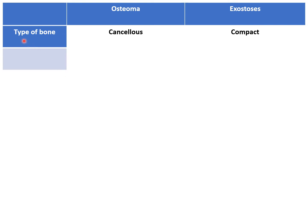First is the type of bone involved. Osteoma develops in the cancellous bone, which is the spongy bone. While exostosis develops in the compact bone or dense bone. Exostosis is basically a new bone growth over an existing bone.